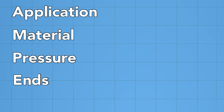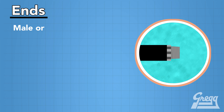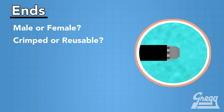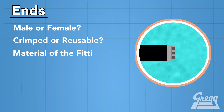E stands for ends. This is the thread series of the hydraulic hoses. We will determine if we need a male end or a female end on the hose assembly. Do you want to have that hose assembly crimped or is it a reusable style? On those fittings, what material are they made of — brass, stainless, or carbon steel?